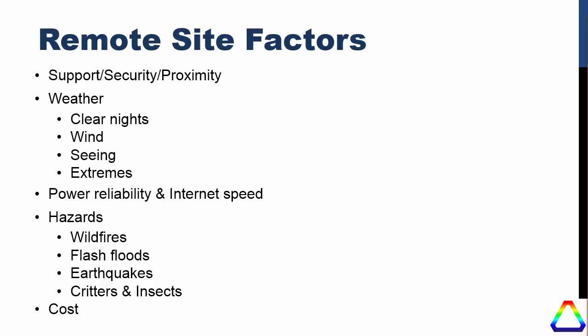Weather factors to consider include clear nights and wind — you can have a clear night but if it's incredibly windy you may not be able to use it. Seeing conditions are also a consideration depending on the type of observing. At the Chile site it's not unusual to have temperatures up to plus 30 and all the way down to minus 20 degrees Celsius, so there can be fairly large extremes. Power reliability is very important — you need a stable source of power to run the observatory. Internet speed is another consideration; at some remote sites the only option is satellite internet, which can be quite costly and speed-limited.